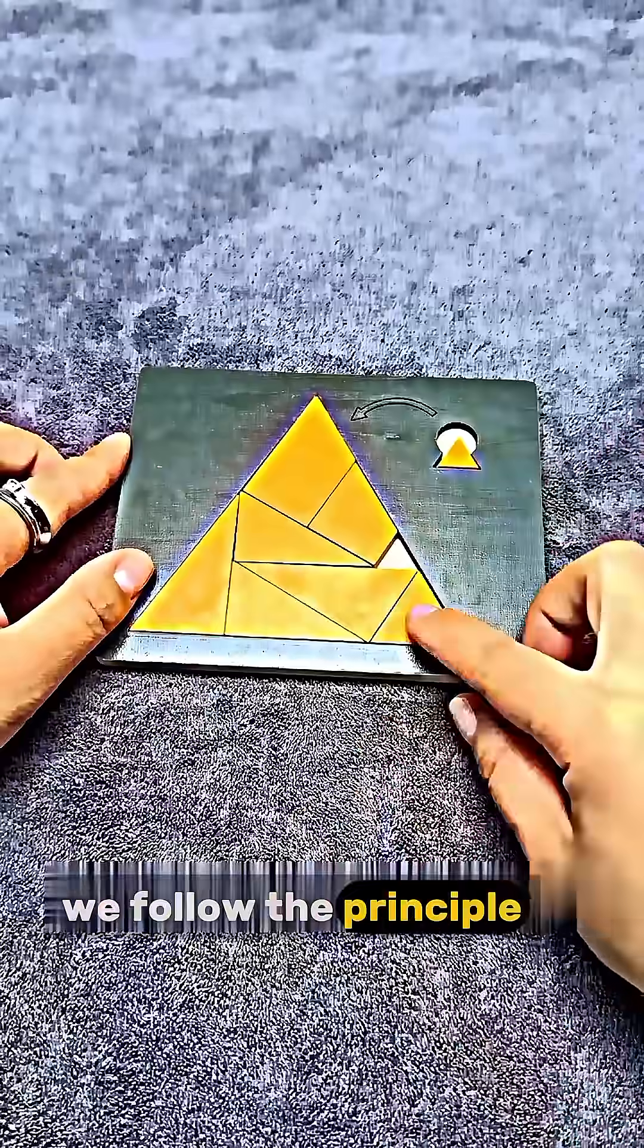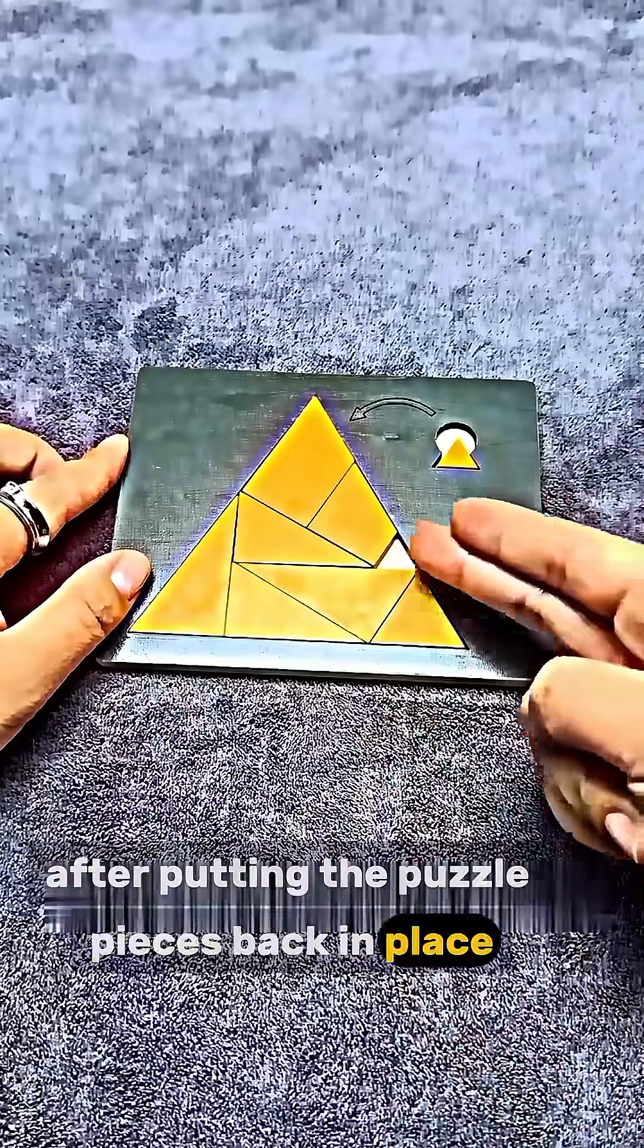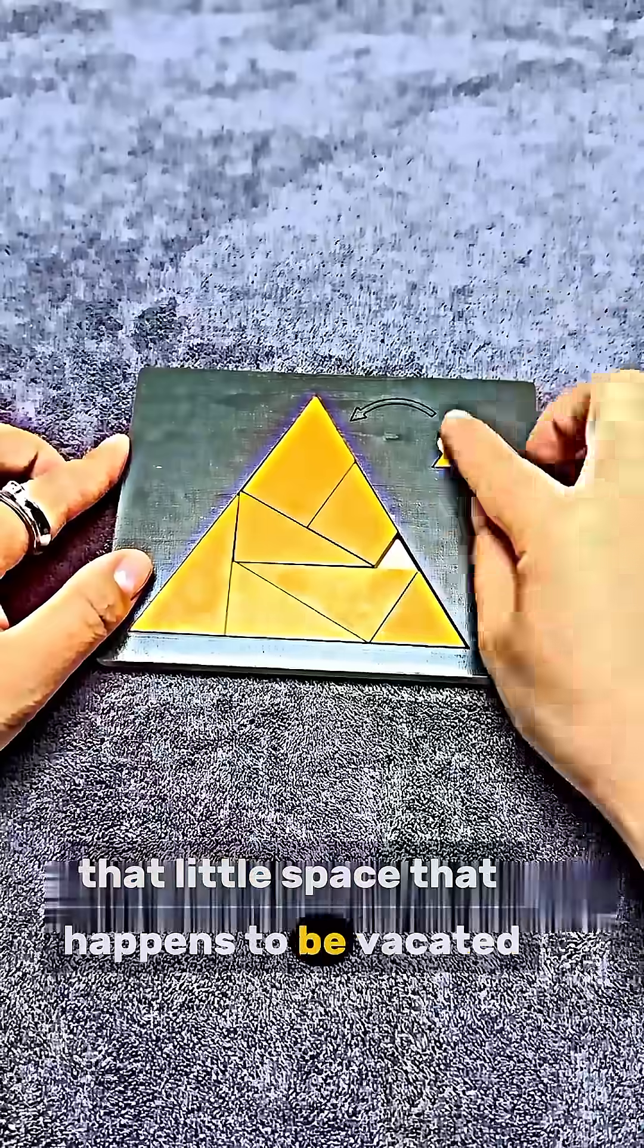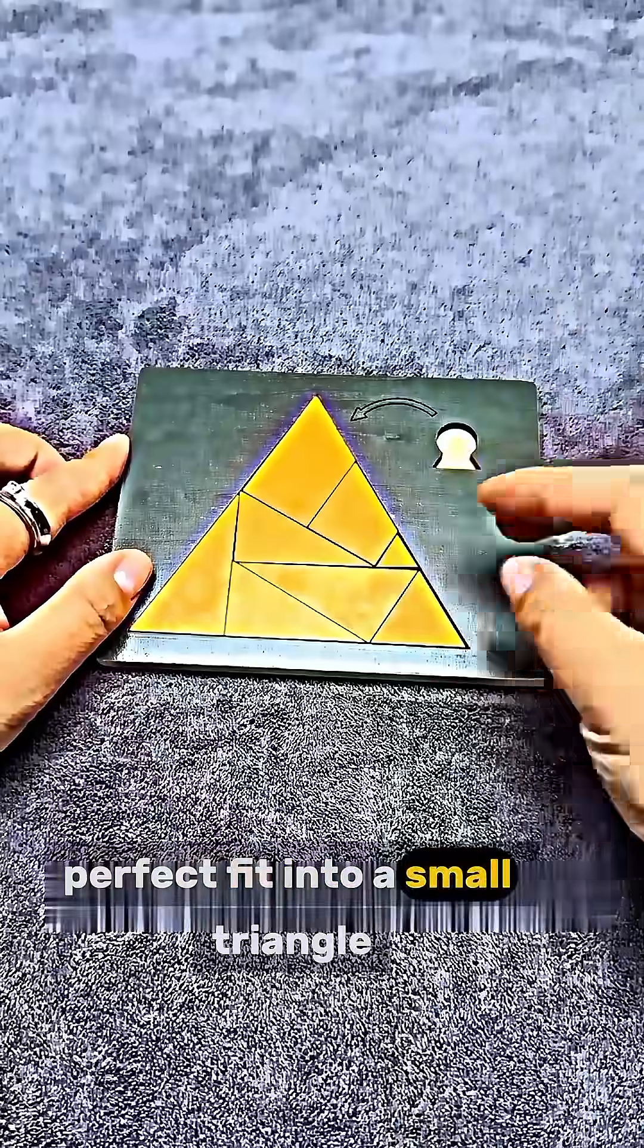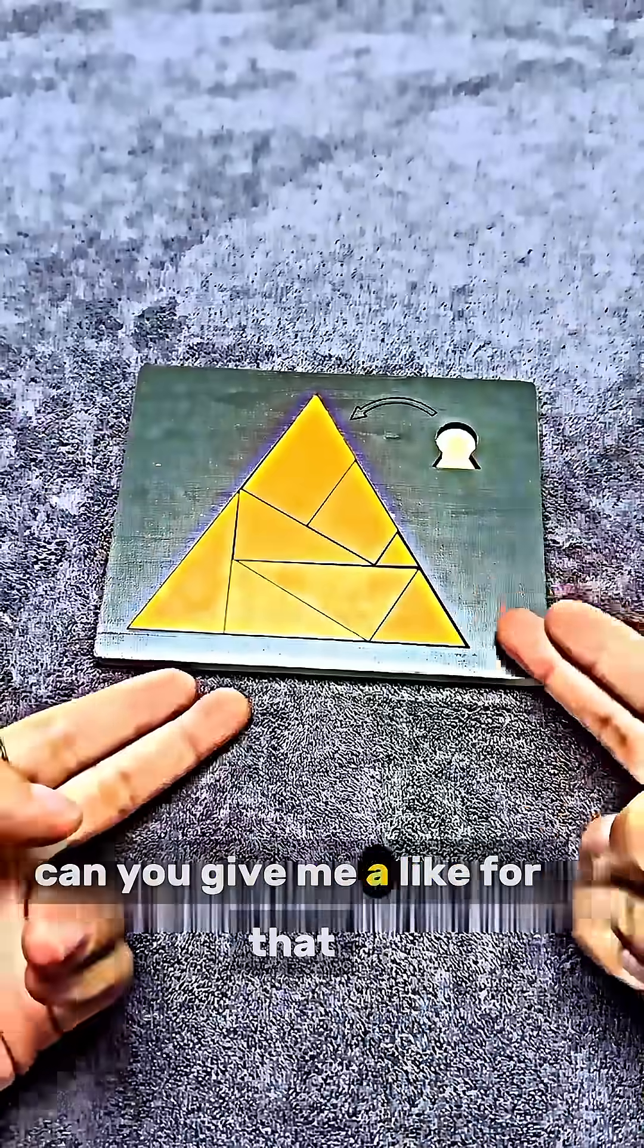We follow the principle. After putting the puzzle pieces back in place, that little space that happens to be vacated, perfect fit into a small triangle. Can you give me a like for that?